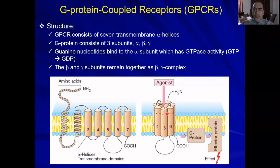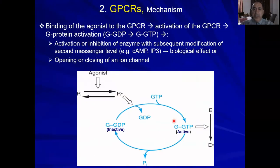Quickly: the agonist binds to the receptor and activates it. This activates the G-protein, meaning GTP displaces GDP. This in turn activates certain effector proteins.